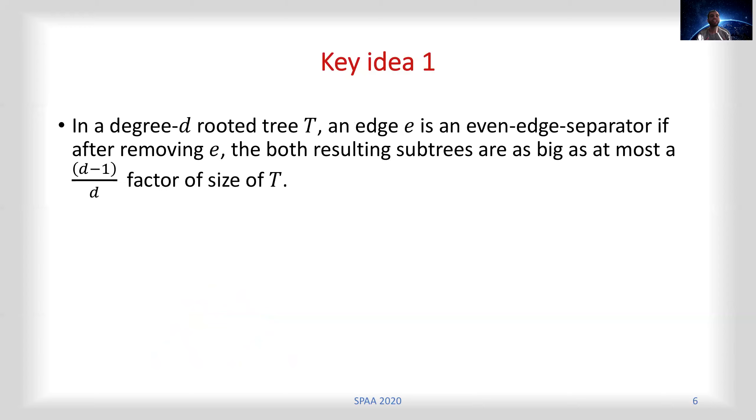A key idea in our tree reconstruction algorithm is that in a rooted tree T of bounded degree d, there is an edge e such that if you remove the edge e, then each of the two resulting subtrees have a size of at most a constant factor (d-1)/d of the original size of T.